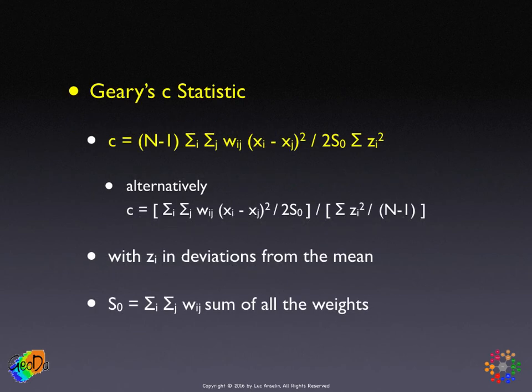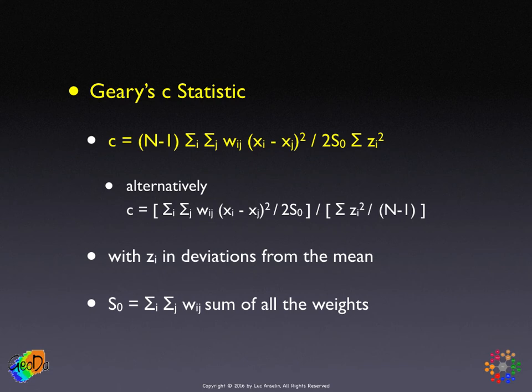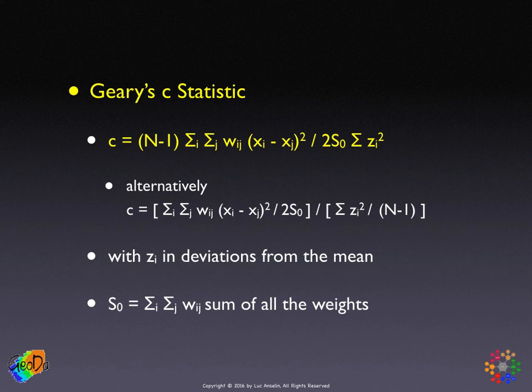Formally, Geary's statistic is similar in shape to Moran's I, with the difference of using the squared difference in the numerator. Because it uses squared differences, we don't have to worry about taking the means out — they're removed automatically by the differencing. The numerator can be thought of as the sum of squared differences for the neighbors, scaled by the number of non-zero elements. The factor of two is a scaling factor slightly different from Moran's I.